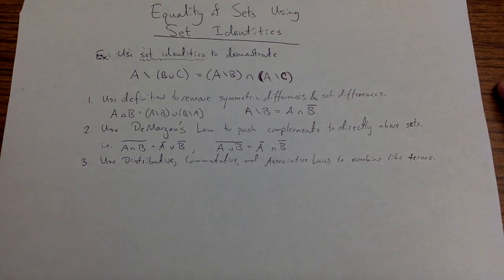Once I have used DeMorgan's Law as much as possible and my complements are either directly above sets or they're not at all, I'm going to use distributive, commutative, and associative laws to rearrange the terms in such a way that I'm trying to get sets of the same type next to each other or next to their complements.